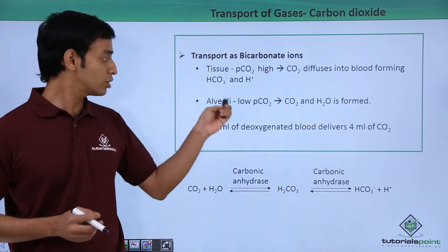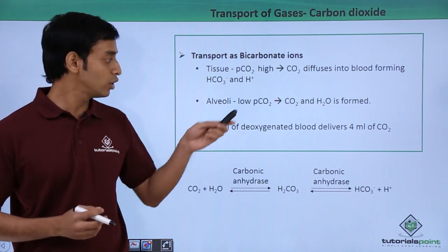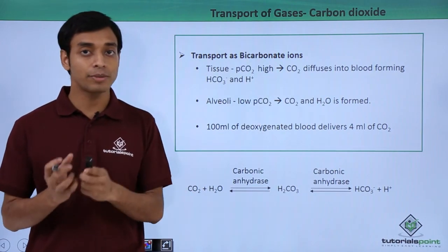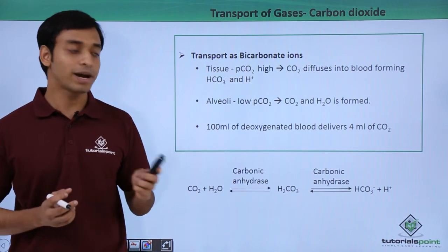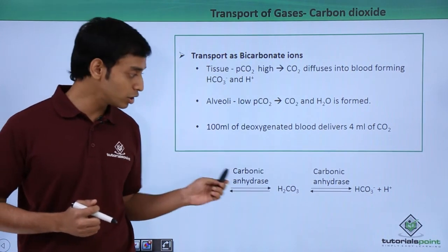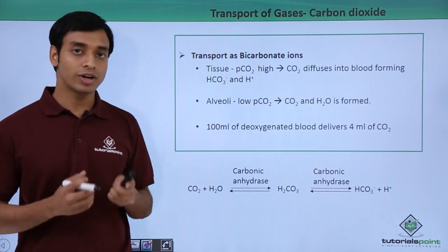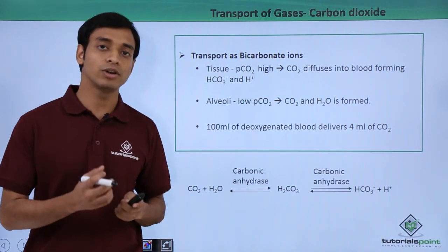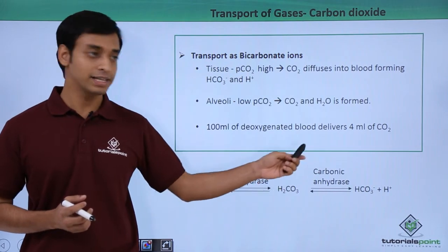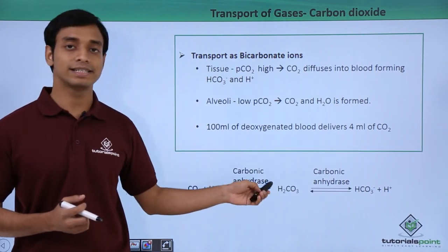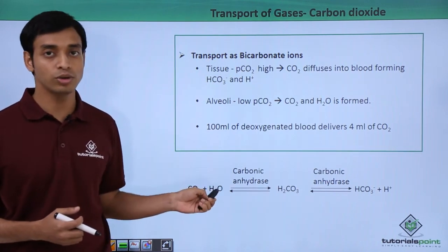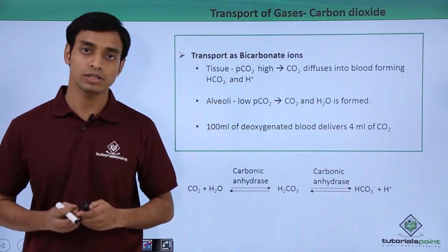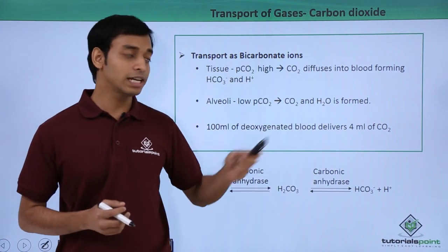At the alveoli, the partial pressure of carbon dioxide is very low. Under this condition, the reverse reaction occurs: the bicarbonate ions and hydrogen ions carried by the blood are converted back into carbonic acid by carbonic anhydrase, which is then converted into carbon dioxide and water. This carbon dioxide is released through the alveoli and out through the nostrils. Notably, 100 mL of deoxygenated blood can deliver up to about 4 mL of carbon dioxide.